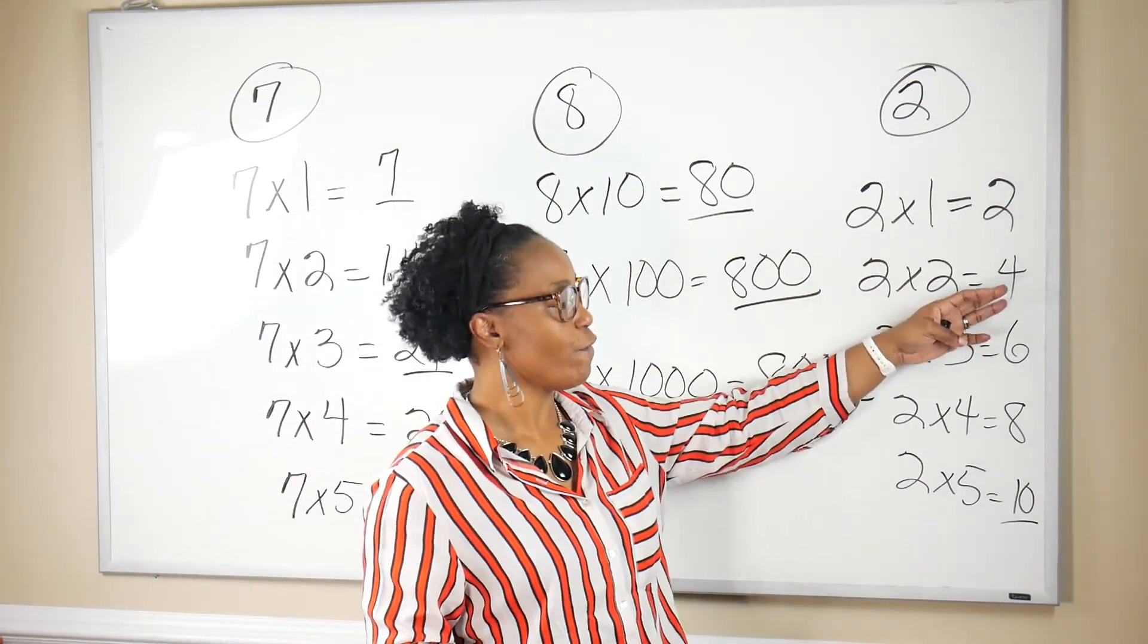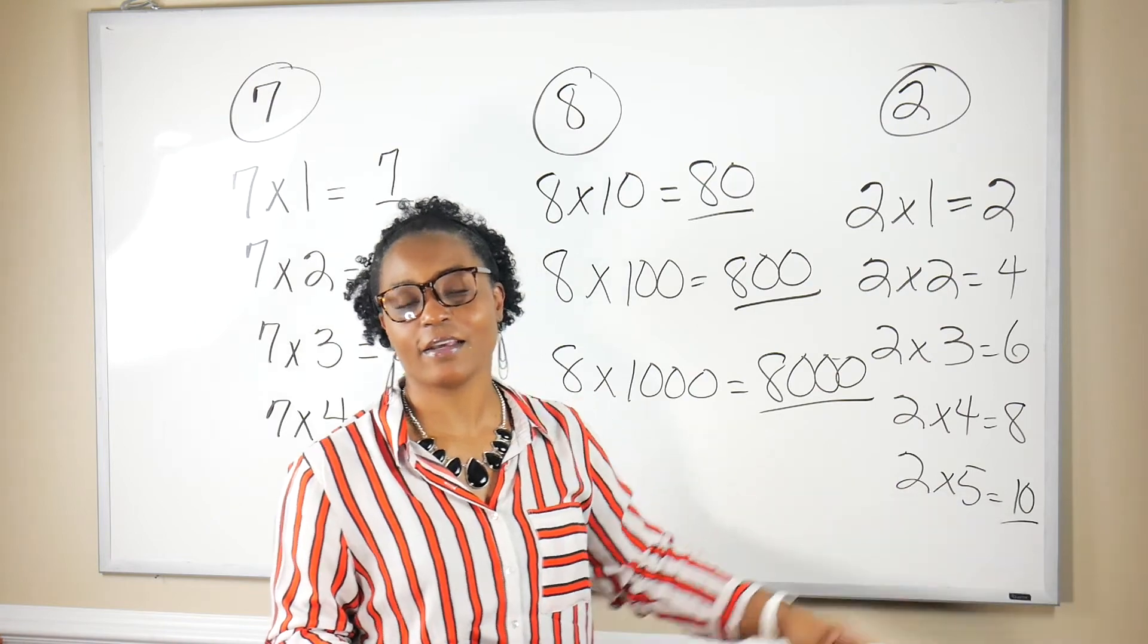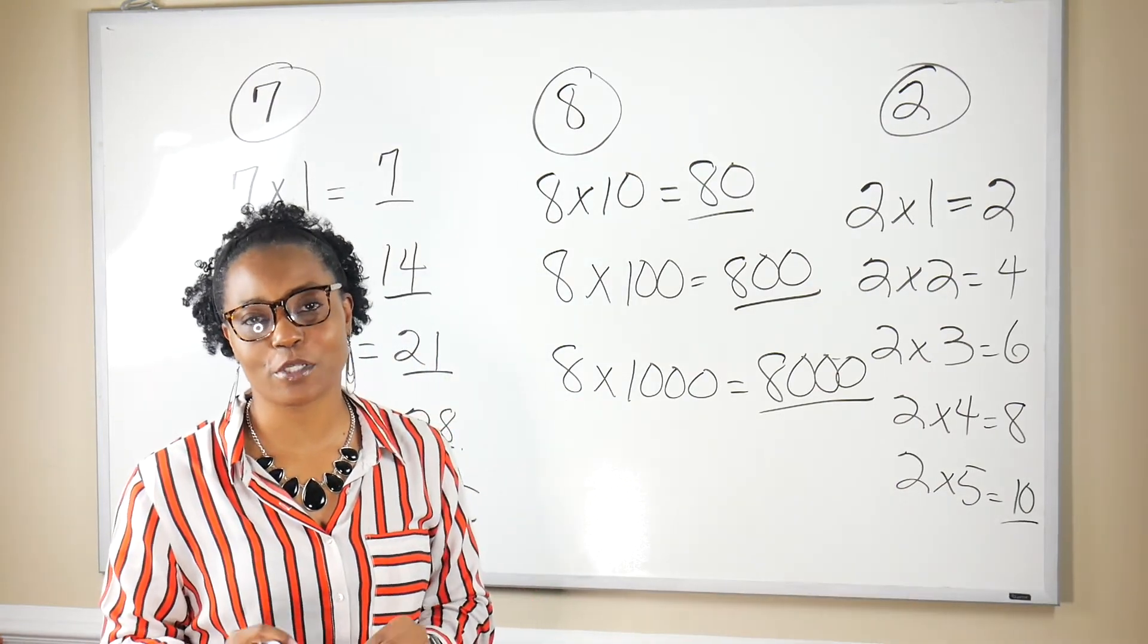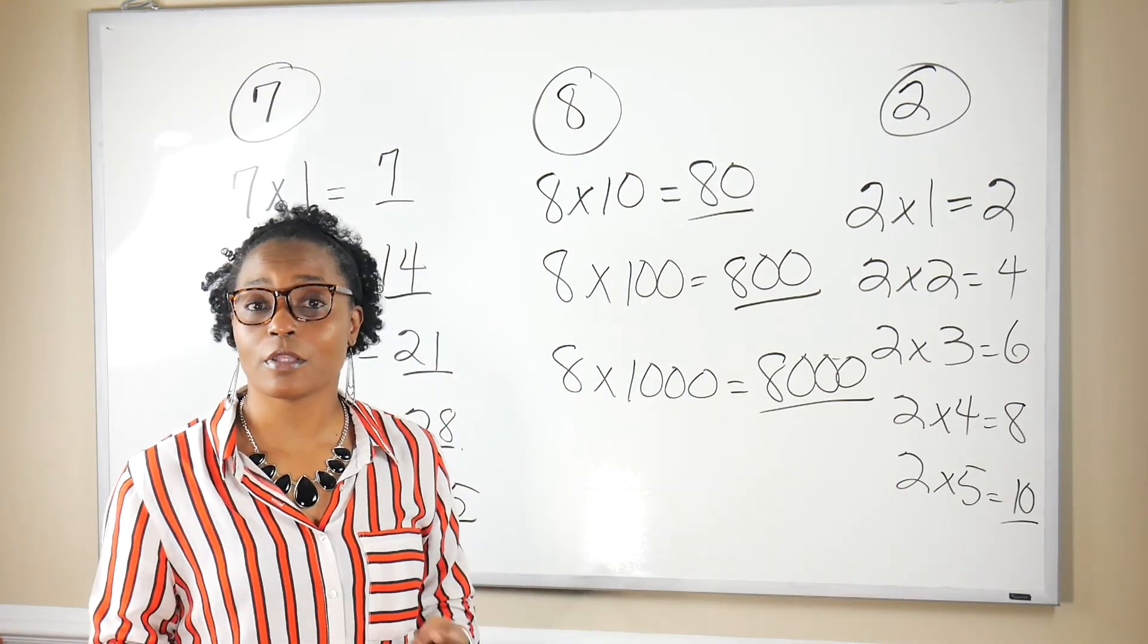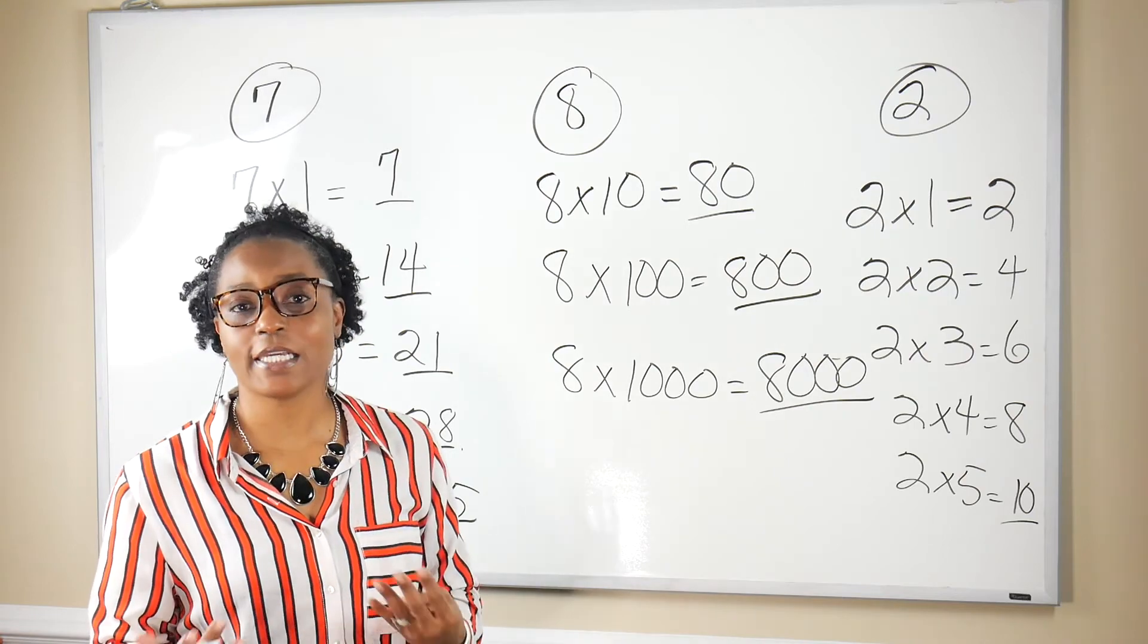So two, four, six, eight, and 10 are the first five multiples of two. They're also the first multiples in a series.